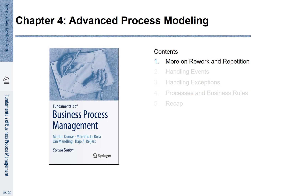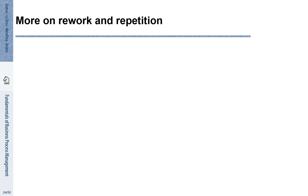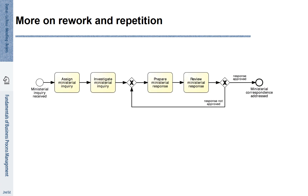Chapter 4, Section 1 – More on rework and repetition. Let's start with the example of a process that we have seen earlier — the example of a ministerial inquiry. A part of that process can be repeated, shown highlighted in red. There is an XOR join at the entrance of this loop, and there is an XOR split as an exit point.